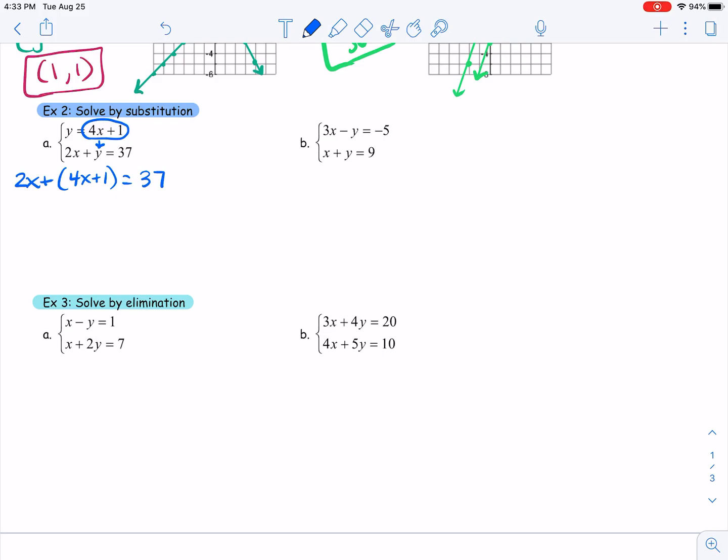So all I need to do is solve for x. I can combine like terms, get 6x plus 1 equals 37. 6x equals 36, x is 6. Awesome, I have half of my answer. Cannot stop here, guys. I take that x equals 6, and I either plug it into my first or my second. However, what do you think would be easier here? I would think plugging it into the first one because I already have that y isolated. So I don't have to move anything around. All I have to do is simplify. 4 times 6 is 24 plus 1 is 25. So y is 25. So what's the solution? 6 comma 25.